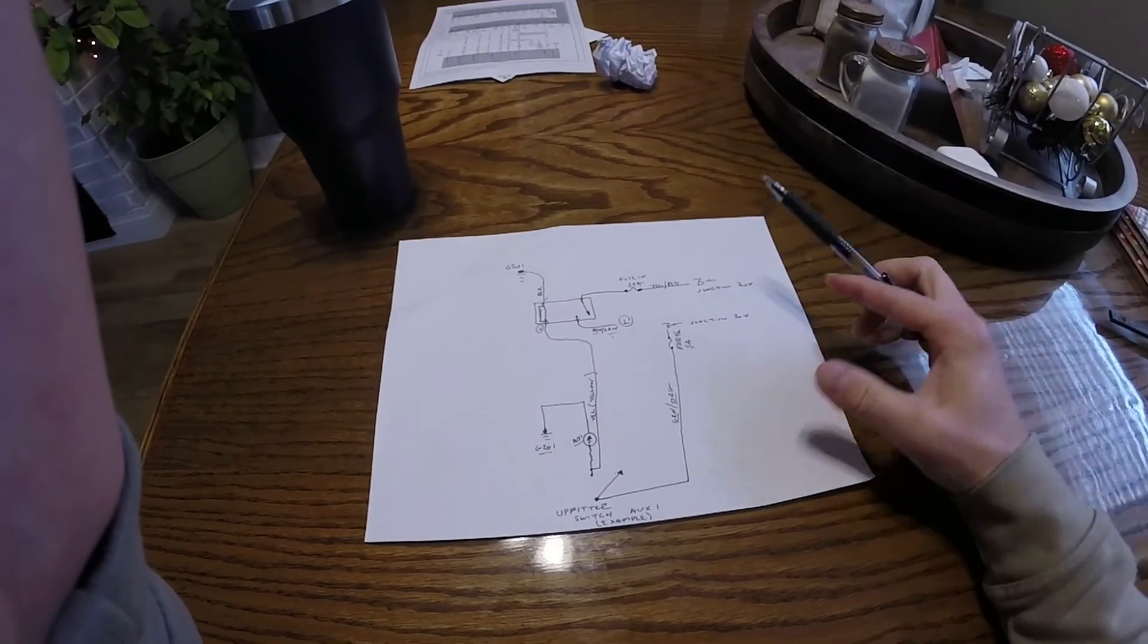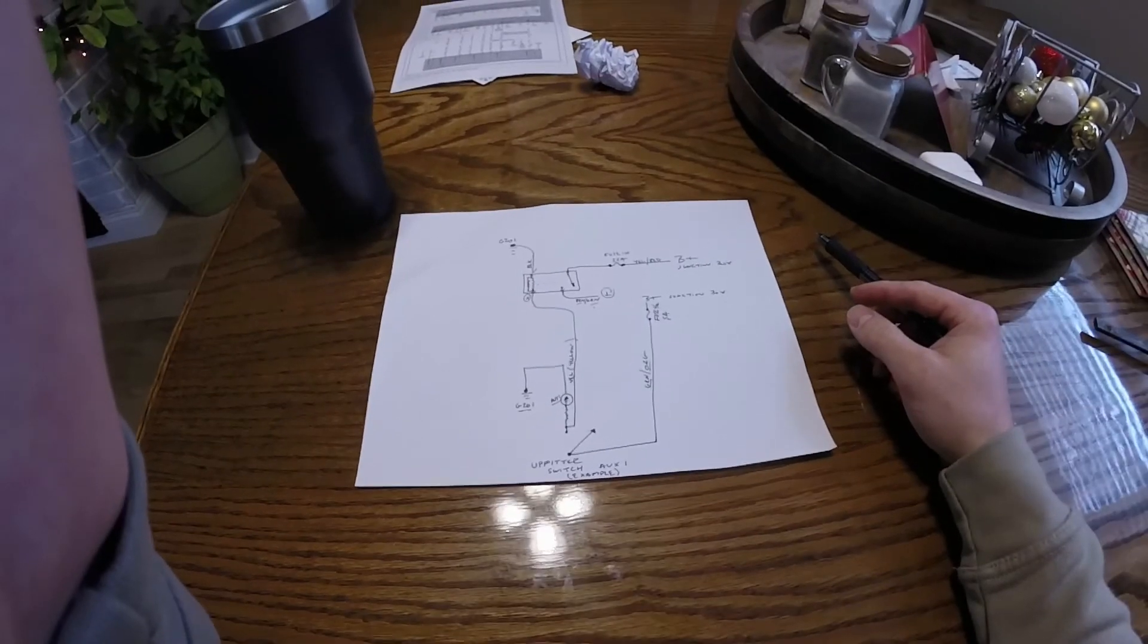It's a brown wire with a green stripe. So underneath my hood for aux position one I'm looking for a brown and green wire. So let's go take a look for that brown and green wire.